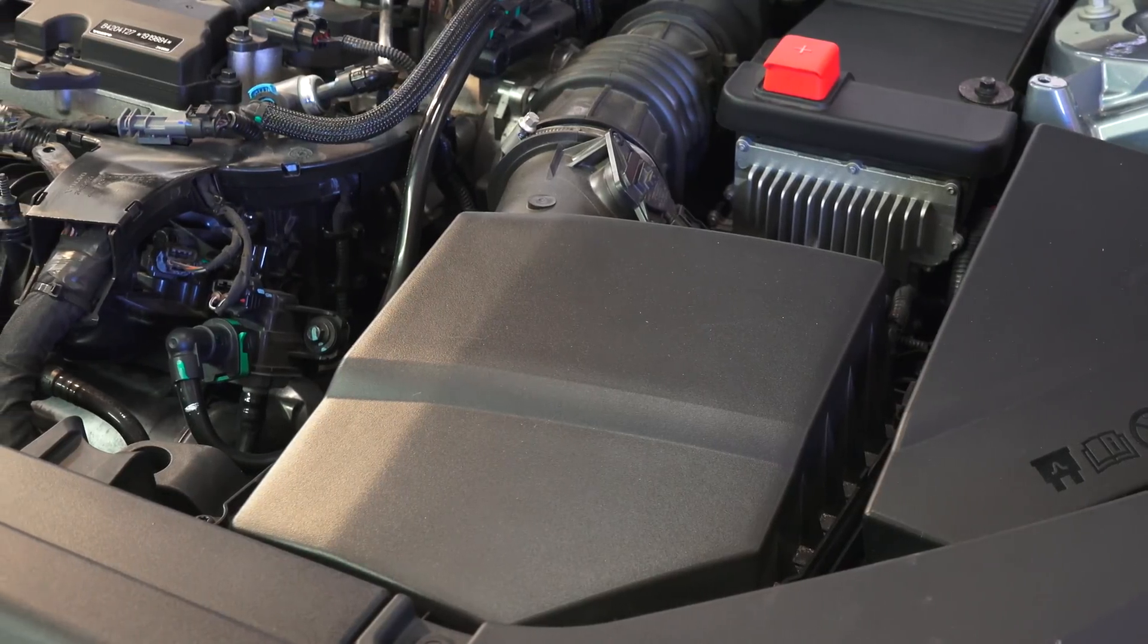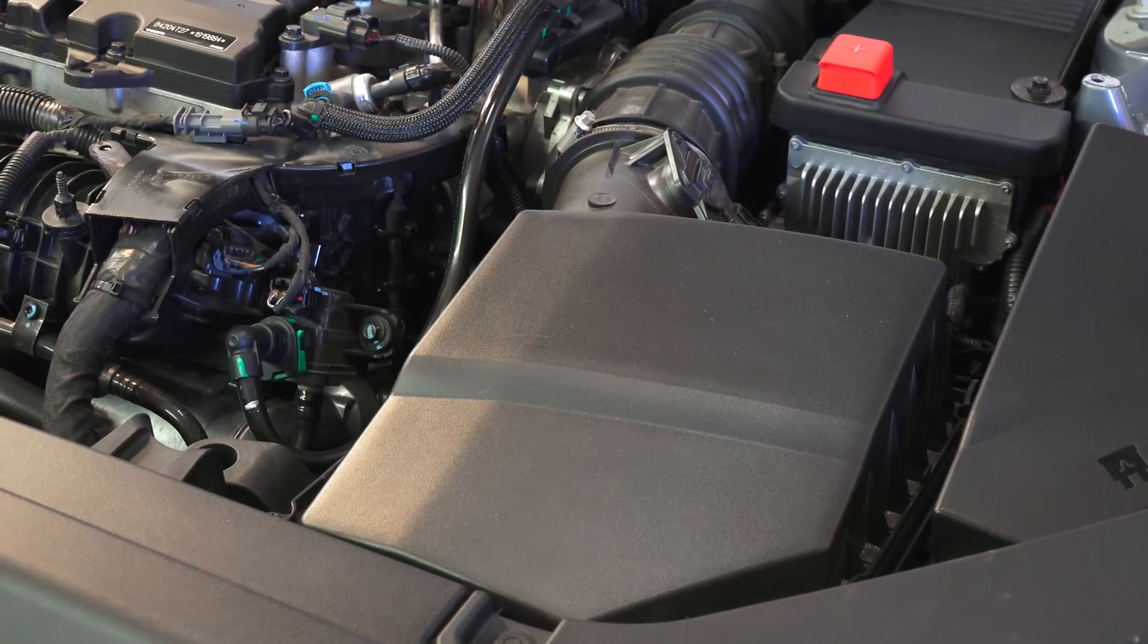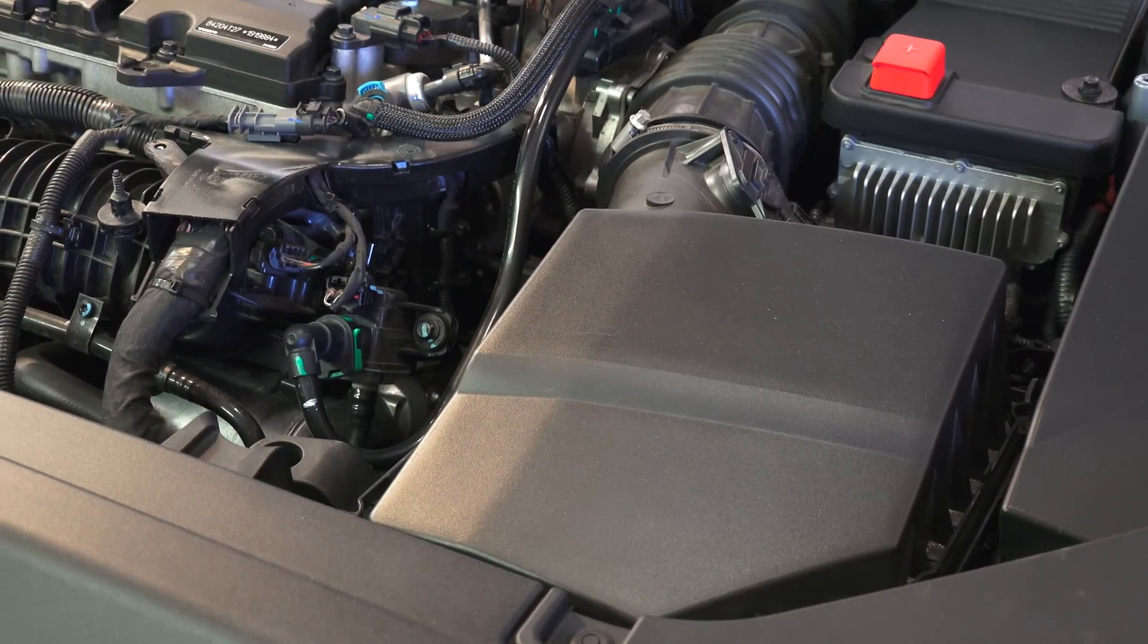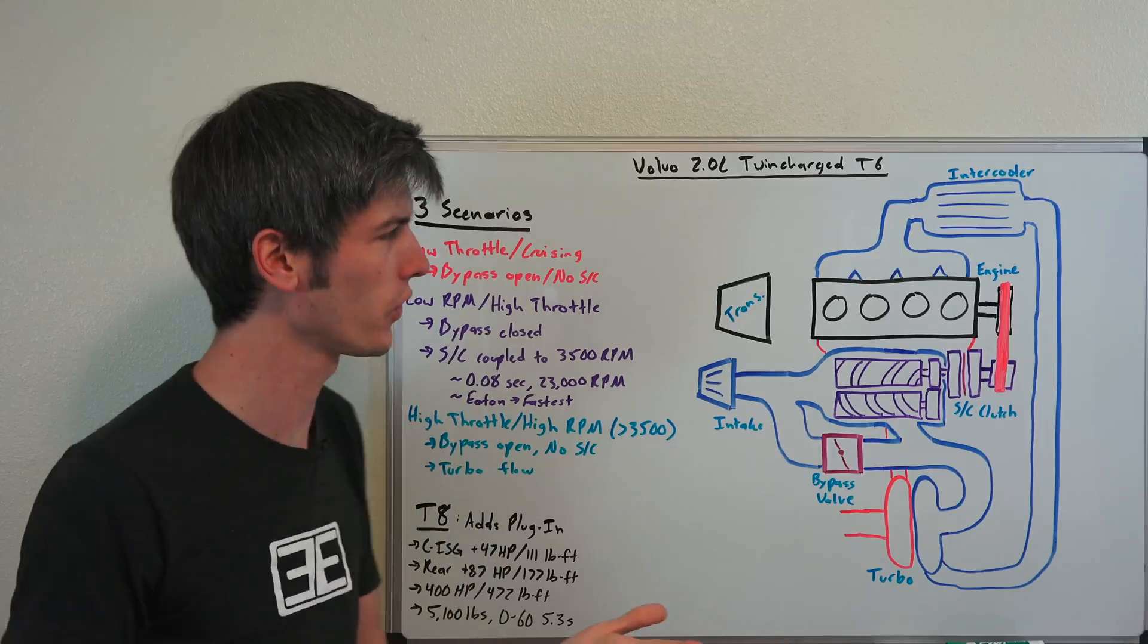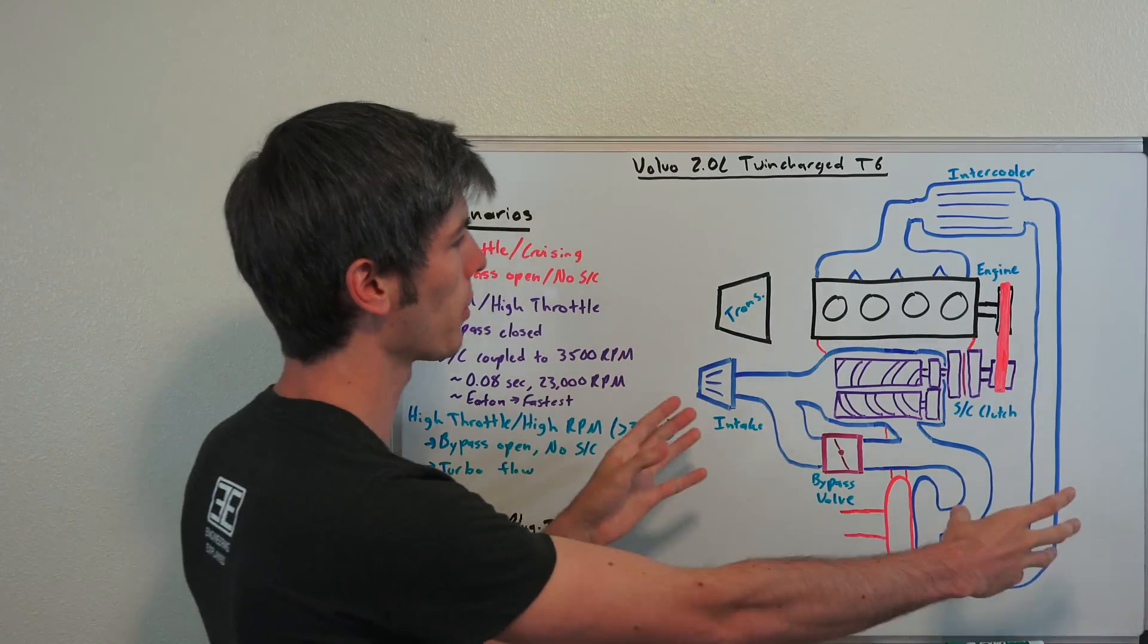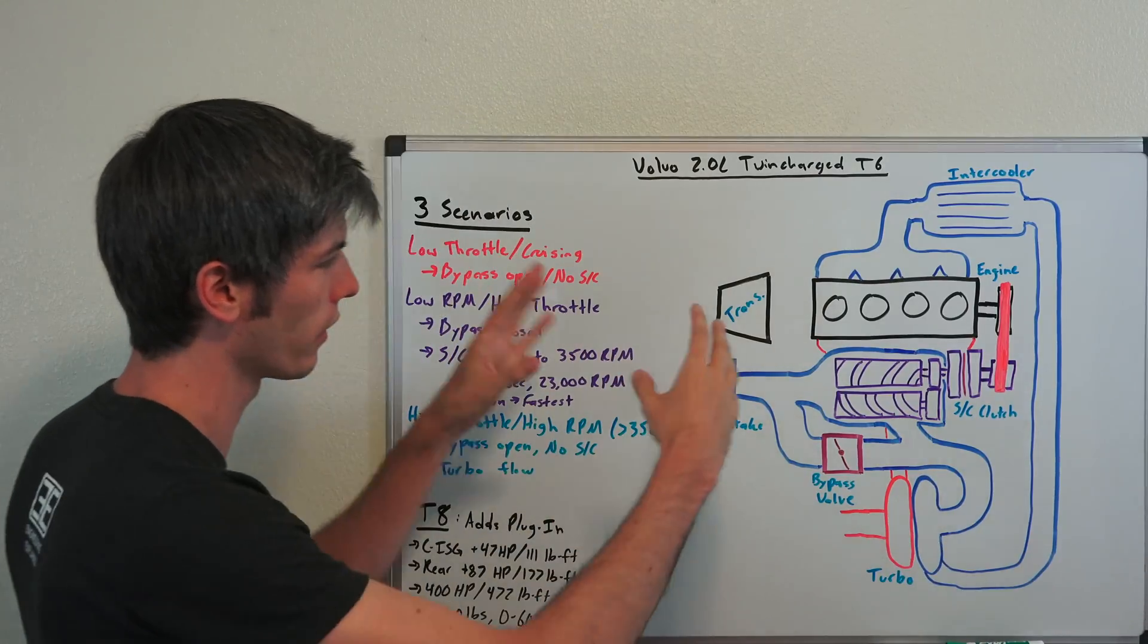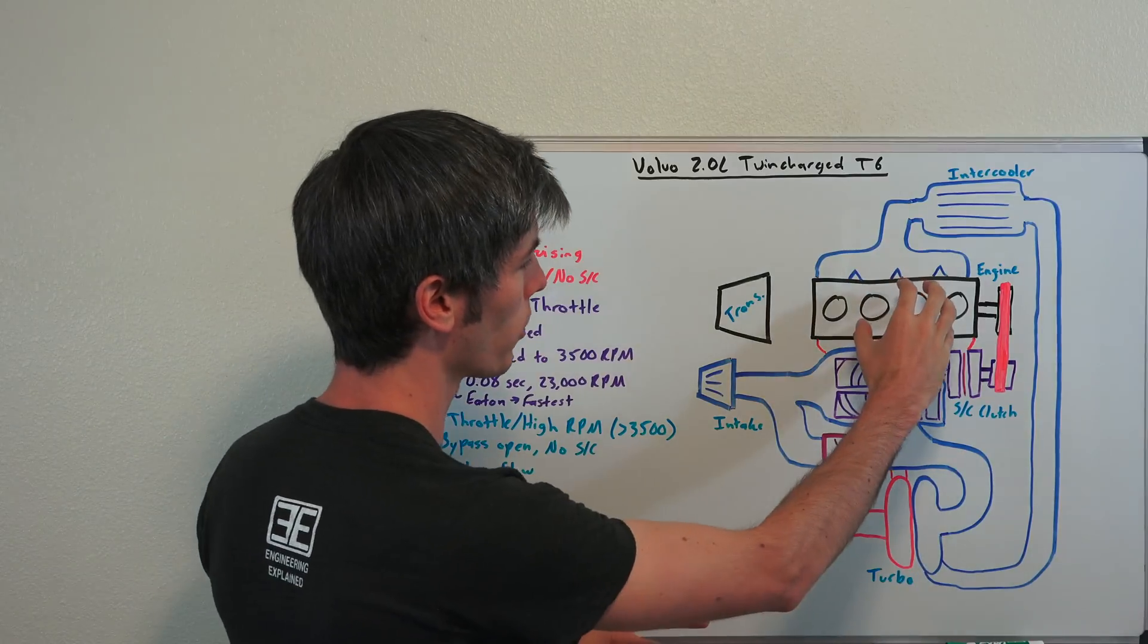Now as far as the airflow for this engine, it's a bit complicated looking at the engine bay and things are pretty well hidden. So we're going to look at the whiteboard here so we can get a better understanding of this. We've got a representation of what this looks like kind of sprawled out here, where here we have our engine,